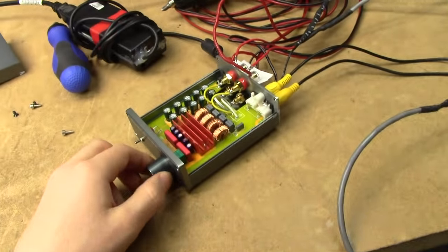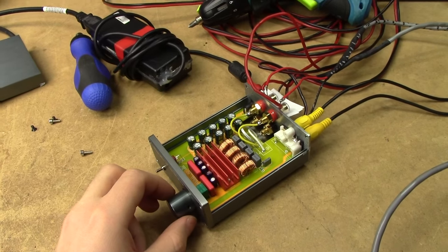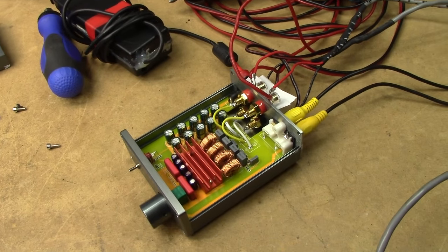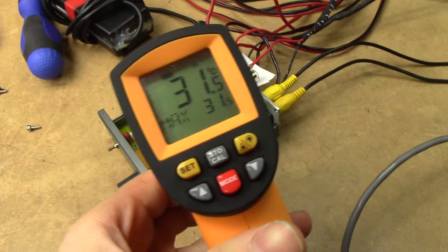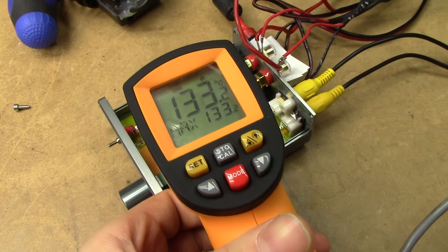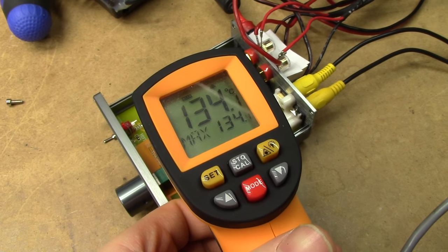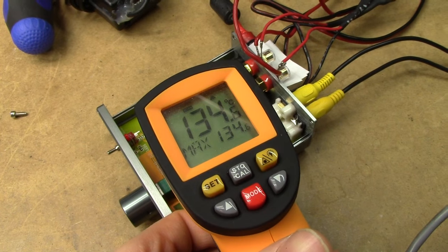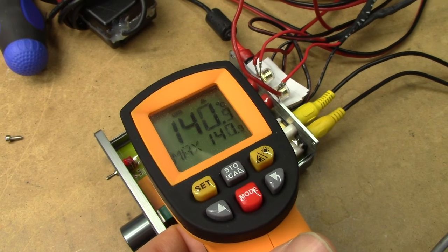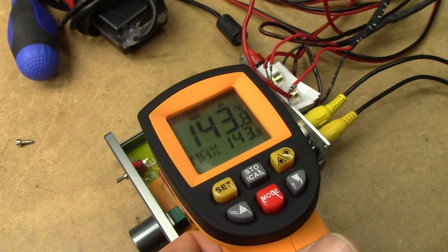Drawing 140 watts from the grid right now. Clipping pretty hard. The junction temperature has to be approaching 200 degrees by now. Jesus.